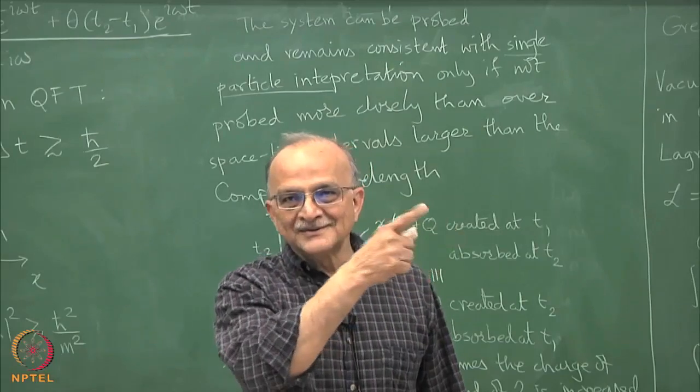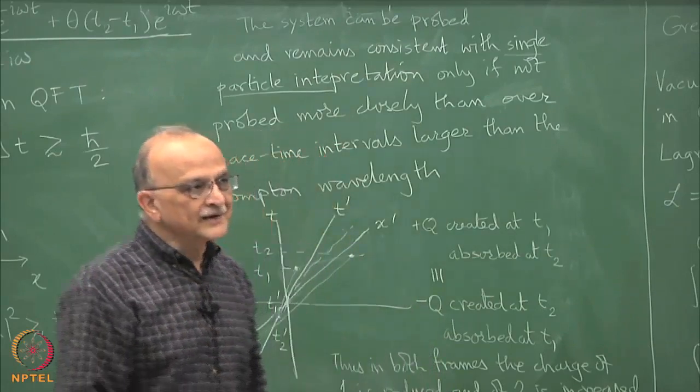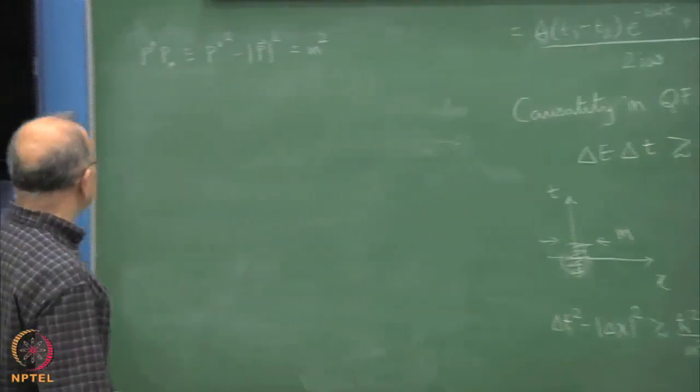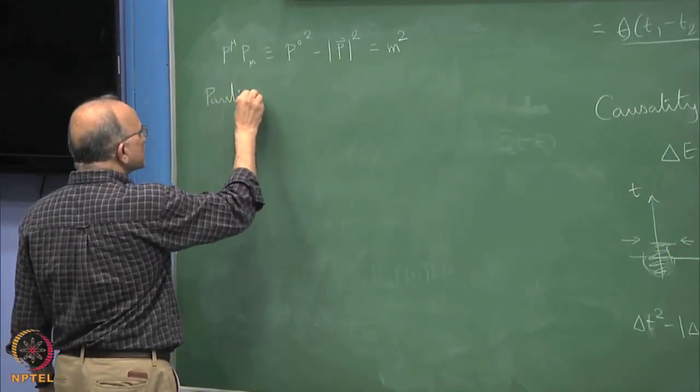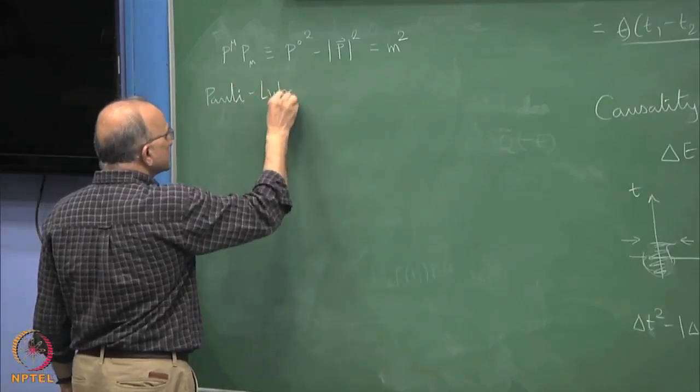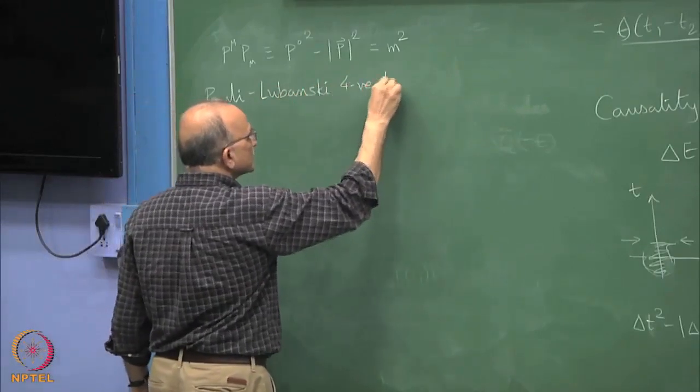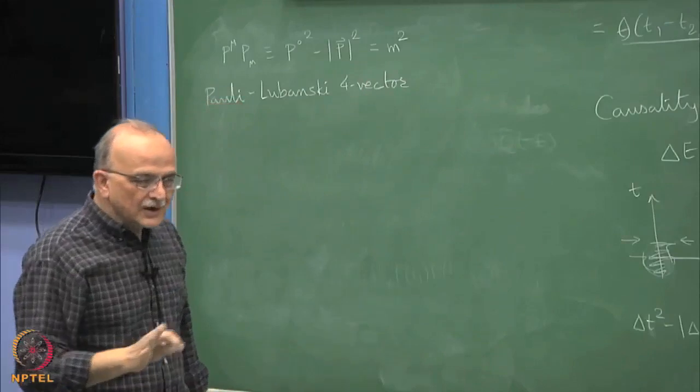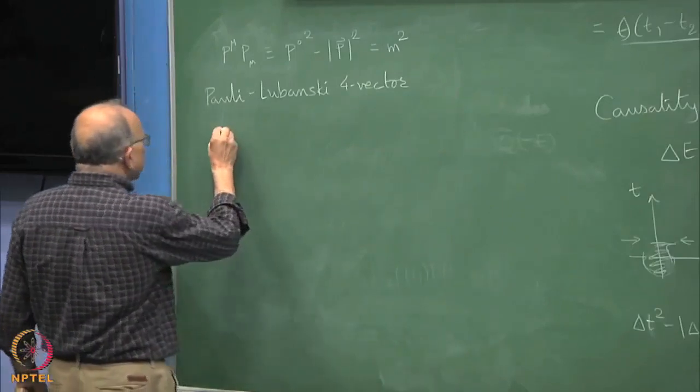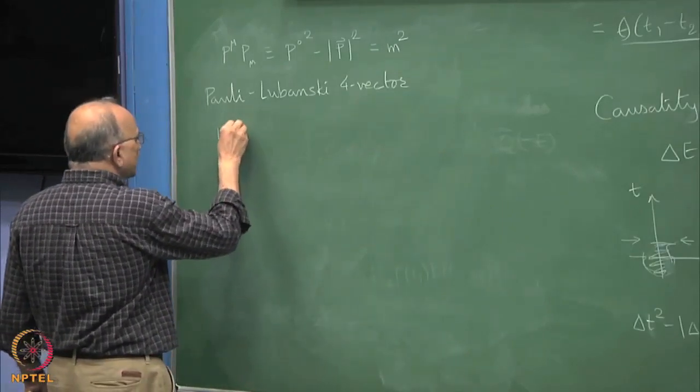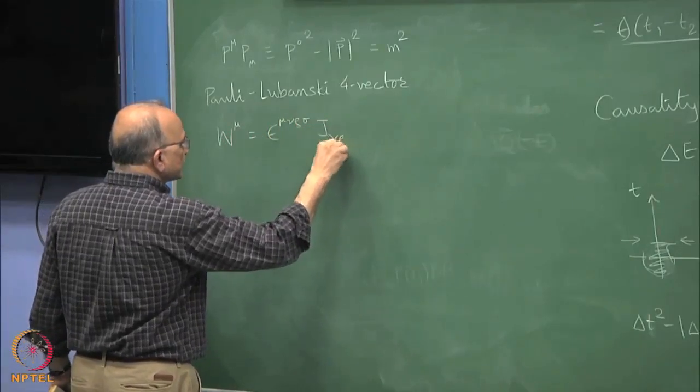What is the other Casimir invariant for this? Anyone else knows? It is not just spin. There is a 4 vector called Pauli-Lubanski vector.